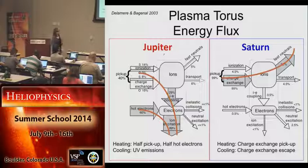Finally, to look at the plasma sources summed over all the planets: we have these very strong sources at Jupiter and Saturn, and the rest are pretty minor by comparison.